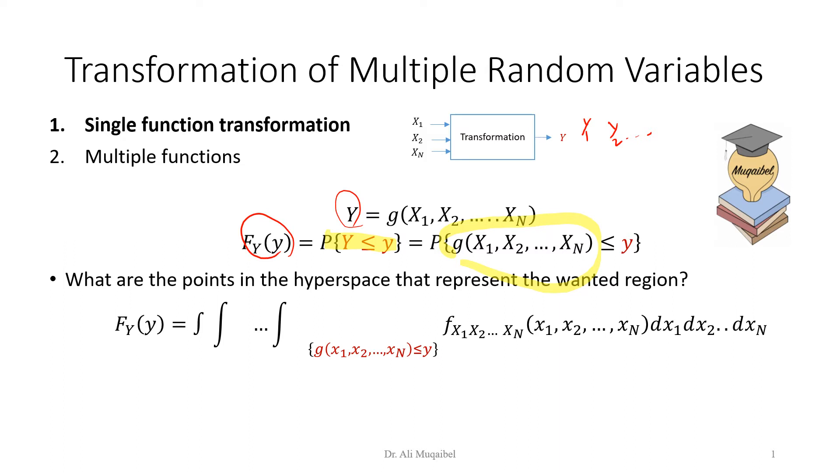Once we know this region, we can integrate the joint PDF over all variables. What are the limits? The limits are the value that satisfies the condition that makes y less than or equal to a given value. So these limits maybe is the key to the successful implementation of the equation. Once you get the CDF, you can differentiate with respect to y and get the PDF. We can think of the key to solving this problem is identifying the area.